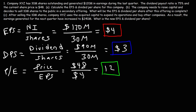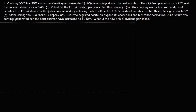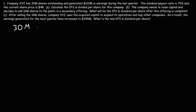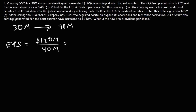Now let's move on to Part B. The company needs to raise capital and decides to sell 10 million shares to the public in a secondary offering. What will be the EPS and dividend per share after this offering is complete? Initially the company had 30 million shares outstanding; after this secondary offering, the total number of shares outstanding increases to 40 million. The earnings haven't changed — it's still $120 million — but the number of shares did change to 40 million. So $120 divided by 40 — canceling zeros, that's 12 over 4 — which is $3. So by increasing the number of shares outstanding, the EPS went down from $4 to $3, assuming earnings remain the same.